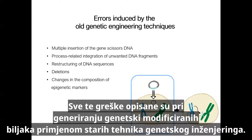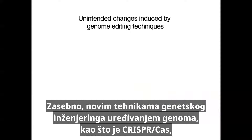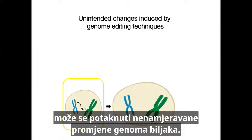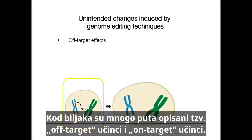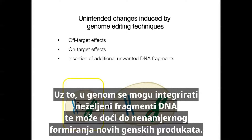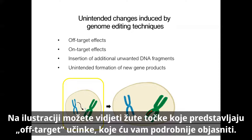All these errors have been described in the generation of genetically engineered plants using old genetic engineering techniques. Separately, with the new genetic engineering techniques of genome editing such as CRISPR-Cas, unintended changes in the genome of plants can be induced. So-called off-target effects and on-target effects have been described many times in plants. In addition, unwanted DNA fragments can be integrated into the genome and new gene products can be formed unintentionally. In the illustration, yellow points represent off-target effects, which I will explain in more detail now.